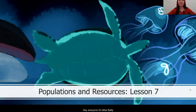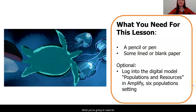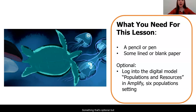Hey everyone! It's Ms. Batty here, back with Lesson 7 in our series on populations and resources. What you're going to need for this lesson today is a pencil or pen, some blank or lined paper to take notes, or if you have the packet pages available, go ahead and get those out as well. Something that's optional but that you might like to have open is the digital model from Amplify, the Populations and Resources Sim. We are going to be using this today to do some more investigations about how populations change or stay stable over time.